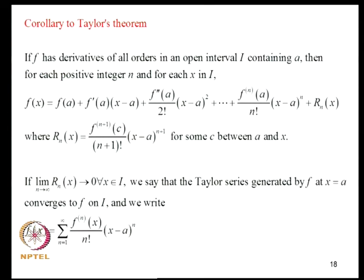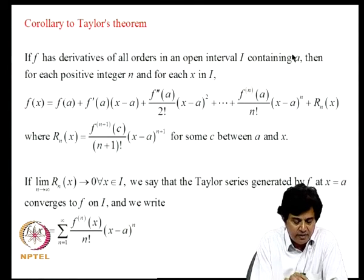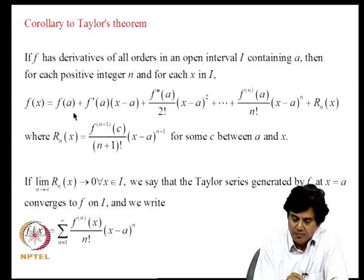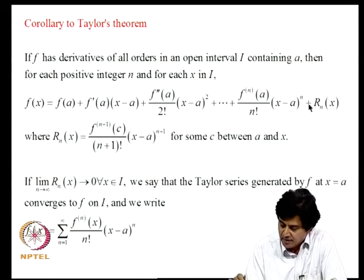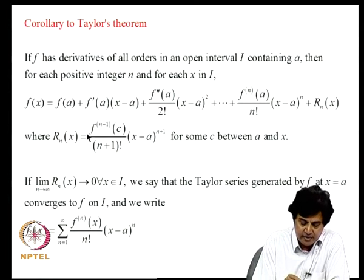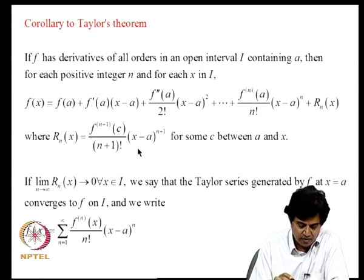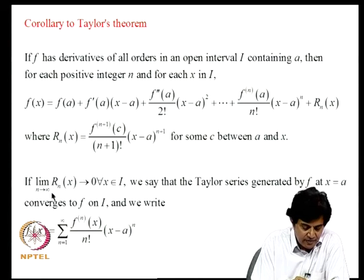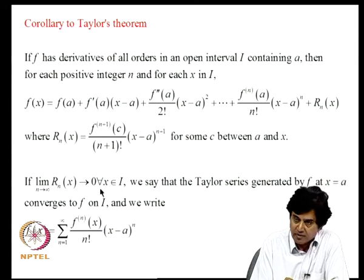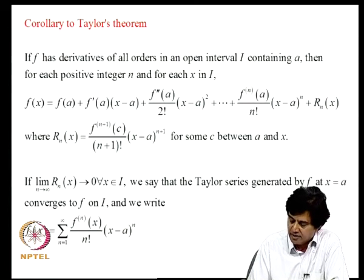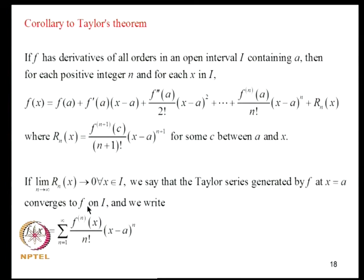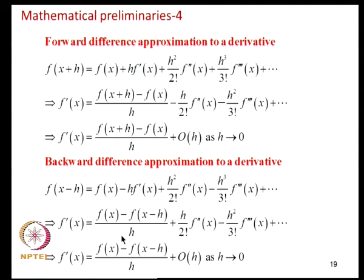If the limit of the remainder term goes to zero for all X in I, the Taylor series converges to F on I. Using Taylor expansion F(X plus H) equals F plus HF'(X) plus H^2/2! F''(X) plus higher terms. Solving for F' gives the forward difference approximation: F'(X) is approximately F(X plus H) minus F(X) divided by H, with a truncation error of order H.